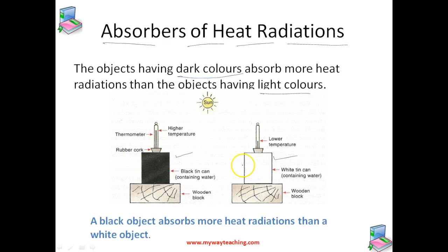Since the temperature of water in the black tin is higher, it shows that the black colored tin can absorbs more heat from the sun. So we conclude that a black object absorbs more heat radiations than a white object. Since a black object is a good absorber of heat radiations, it is also a bad reflector. A white object is a good reflector of heat radiations but a poor absorber.